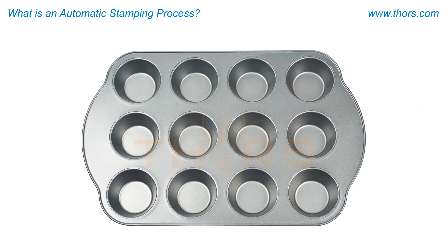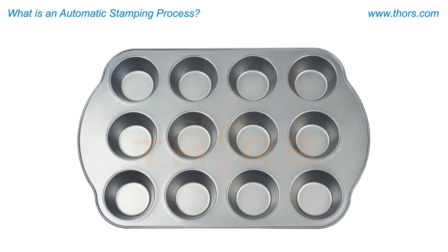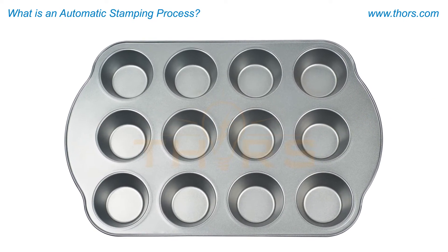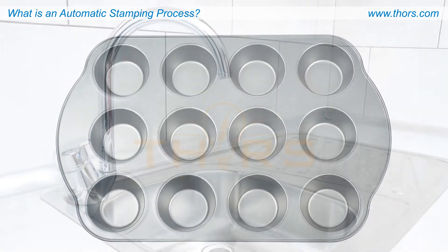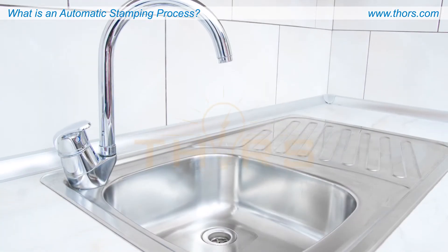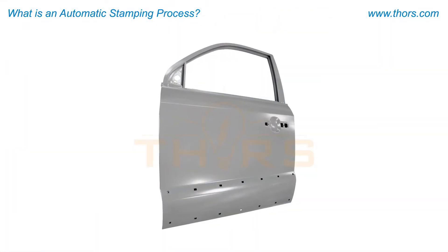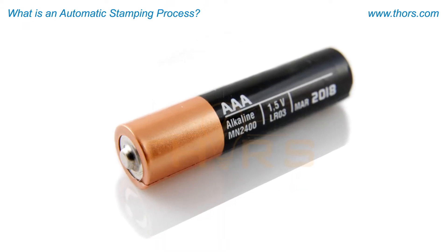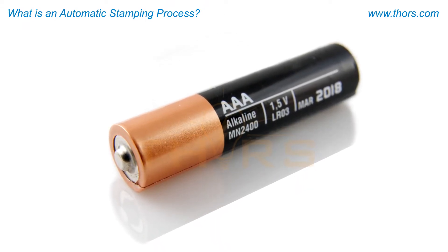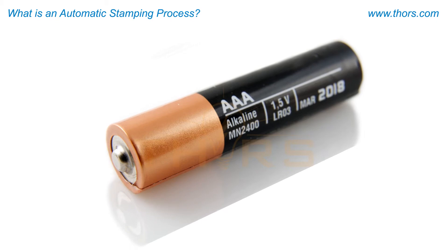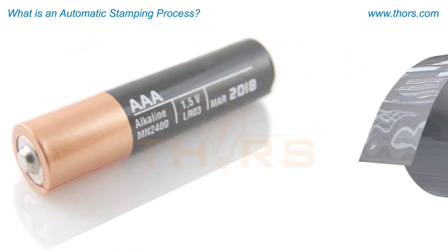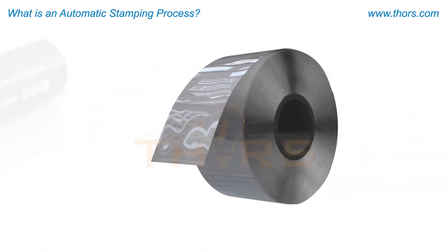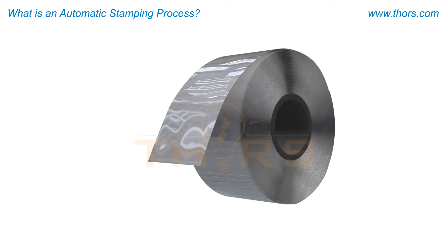Modern-day stamping is used to create many different metal parts. Parts such as muffin tins, sinks, car panels, and battery cases are created by a stamping process. This animation will show an example of an automatic stamping process.